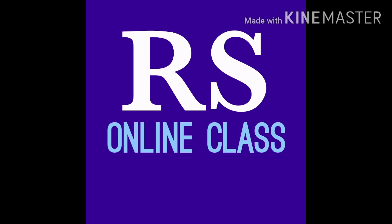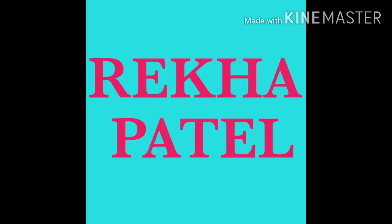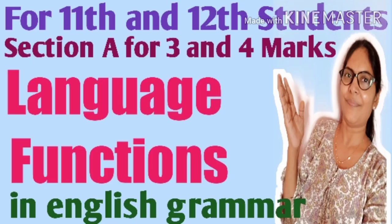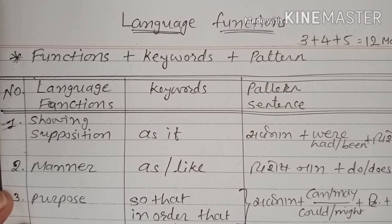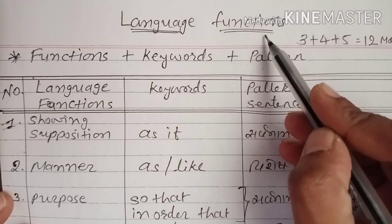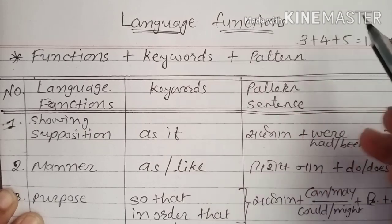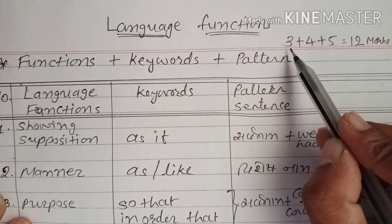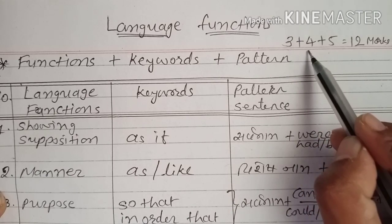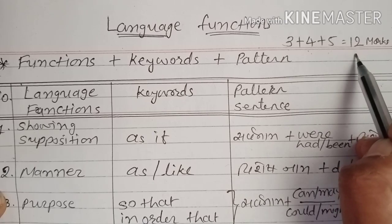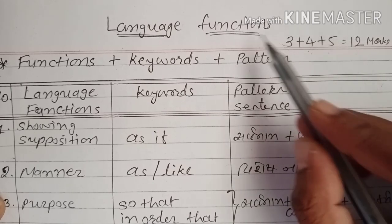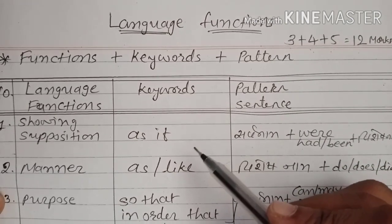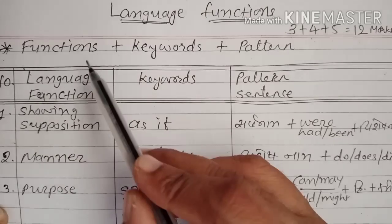Welcome to RS online class. I am Rekha Patel. Today we will discuss English language functions, Section A, for 11th and 12th grades — 3, 4, and 5 mark questions as asked by the board. In total, 12 marks are allocated to language functions.